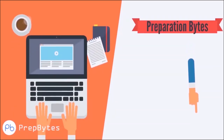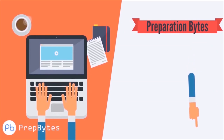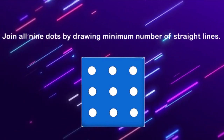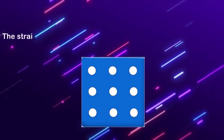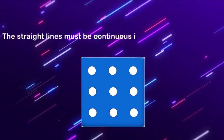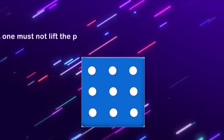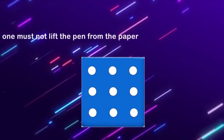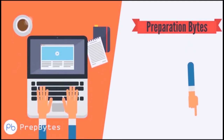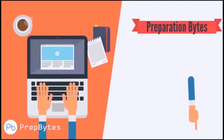Join all nine dots by drawing the minimum number of straight lines. The straight lines must be continuous — that is, one must not lift the pen from the paper once you start drawing.